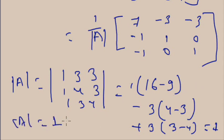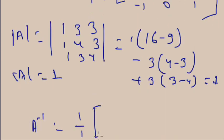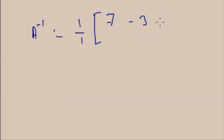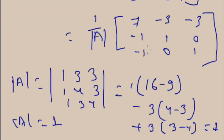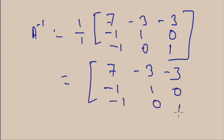Since the determinant is 1, the inverse of matrix A is 1 divided by 1, multiplied by the adjoint matrix, giving: 7, minus 3, minus 3; minus 1, 1, 0; minus 1, 0, 1. This is the inverse value of A. In this way you can calculate the inverse of any square matrix whose determinant value is not zero.